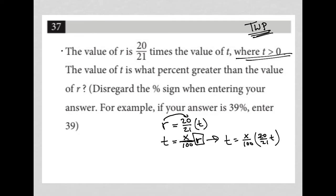And then I can cross-cancel here. 20 goes into 20 once, 20 goes into 100 five times. So this becomes T equals XT—X times T over 5 times 21, which is 105.